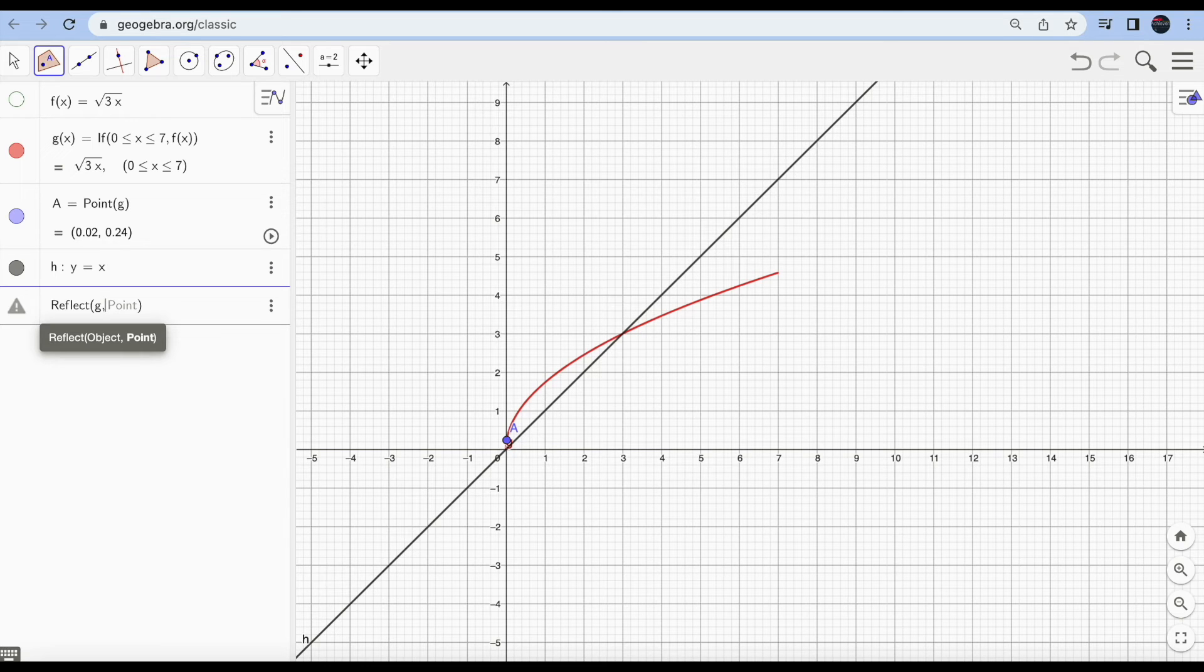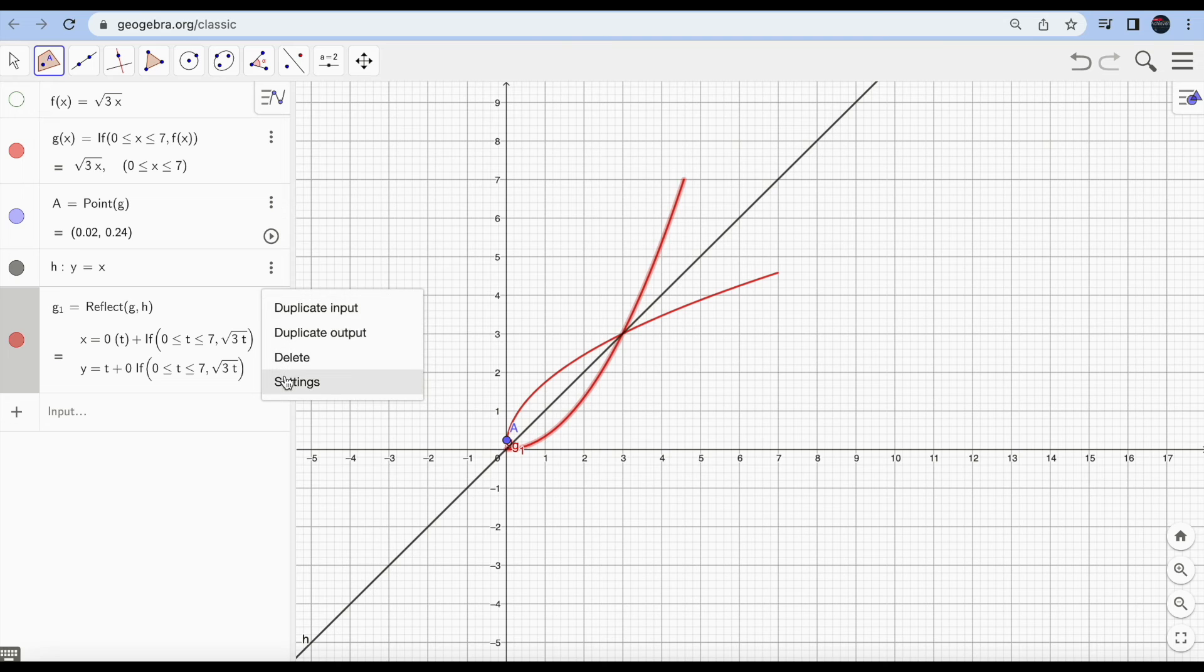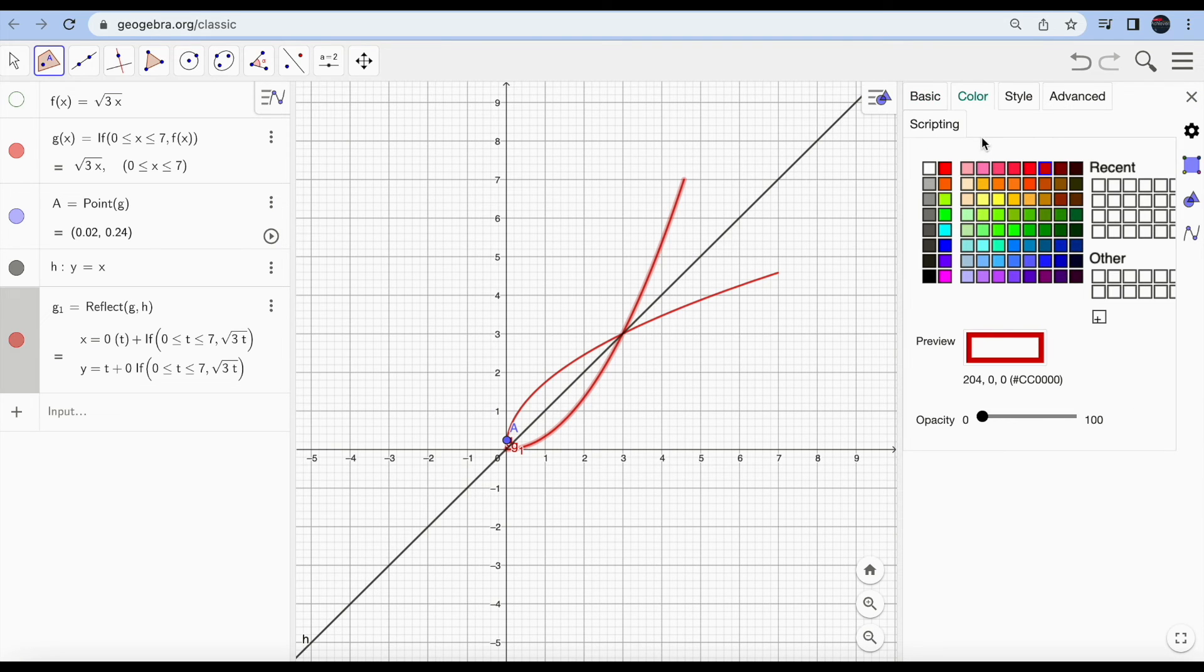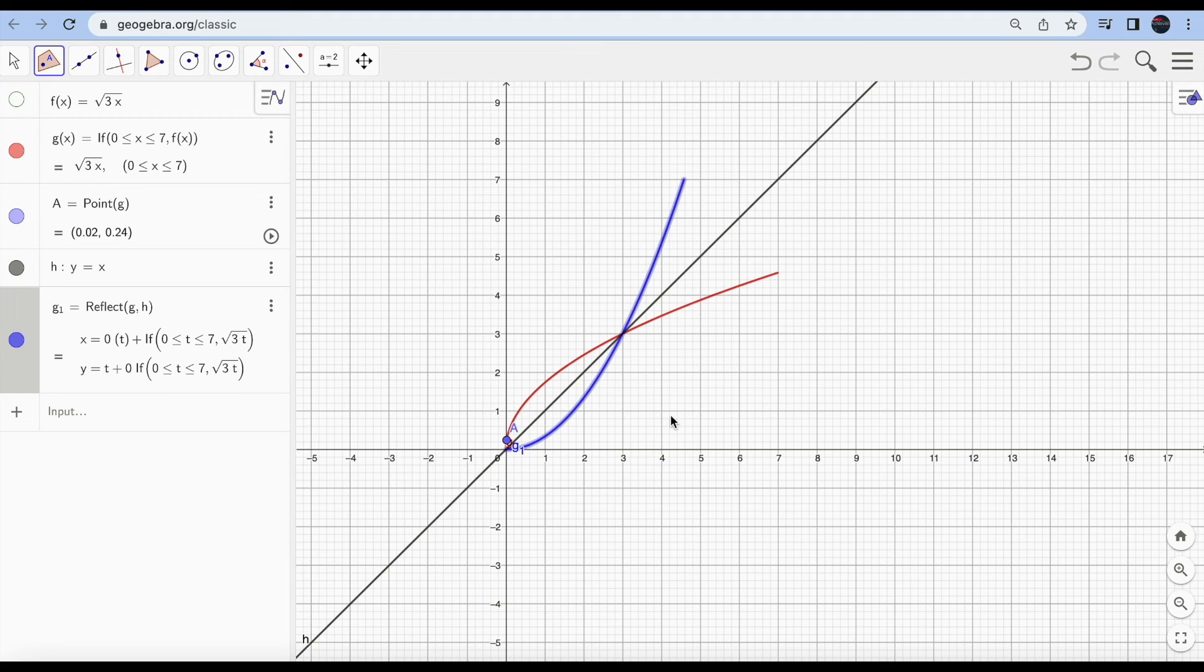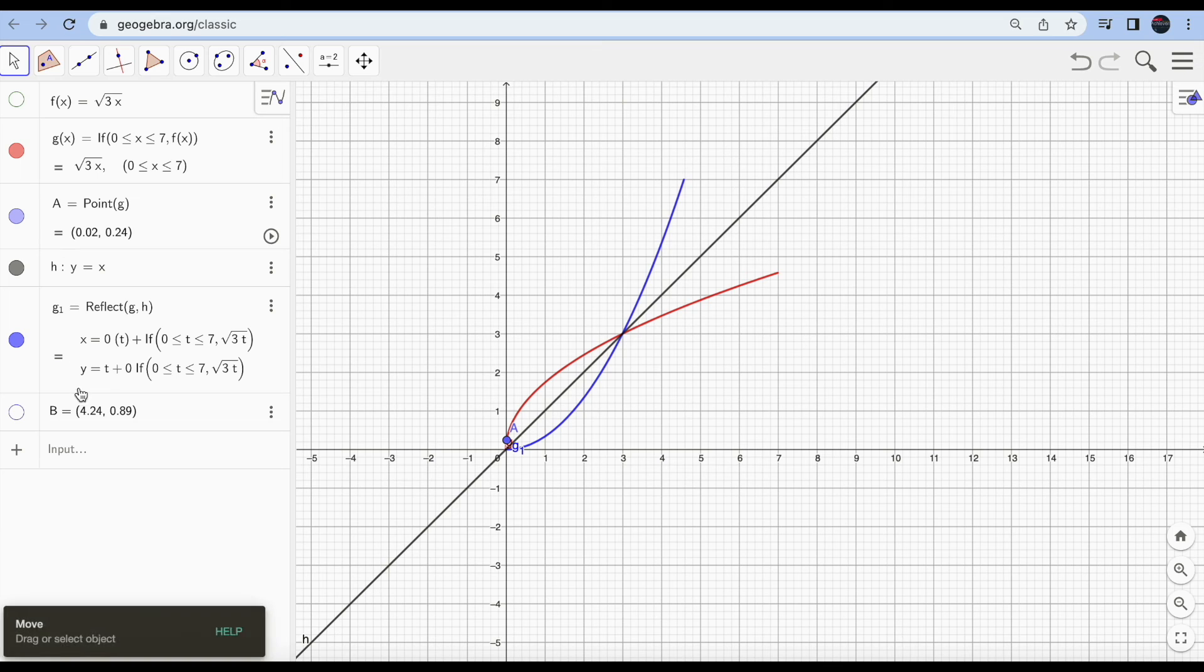This object is d and then the line is h. Look, you can change its color so that you can see the inverse function is different. Sorry, point B. Done. You can also reflect point A as well, A on h.